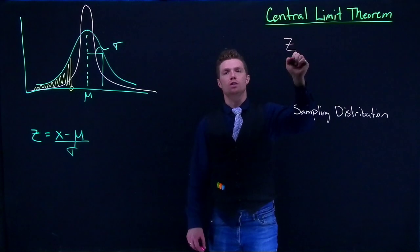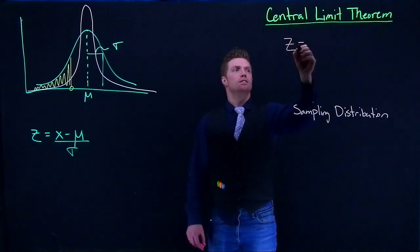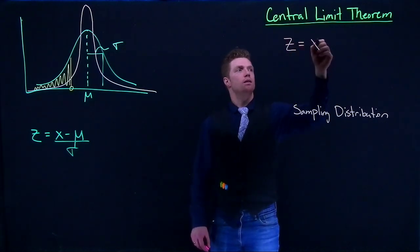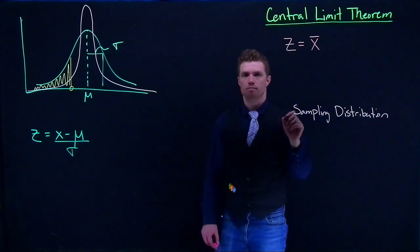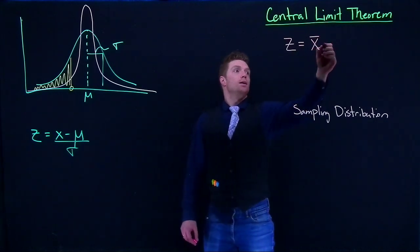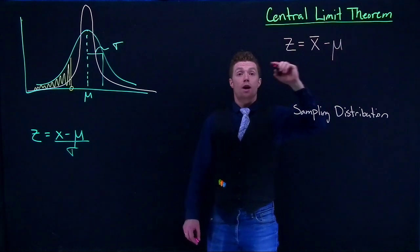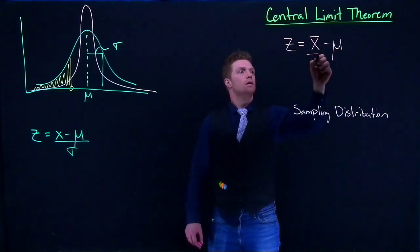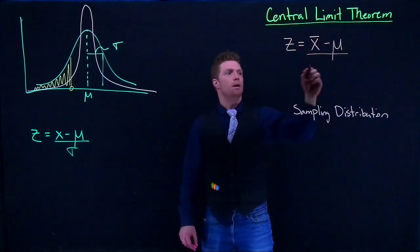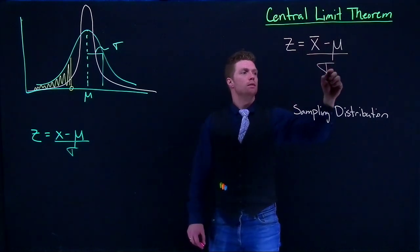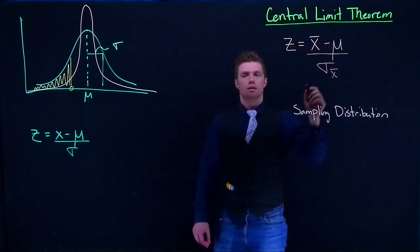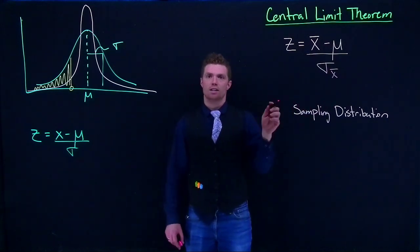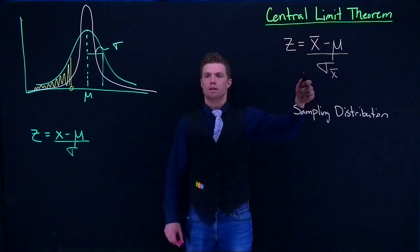It's still a z equation, but instead of talking about x, we're talking about x bar. That's really handy. We still subtract from the mean and we divide by the sampling standard deviation. So we write it like this with sigma with respect to x bar.